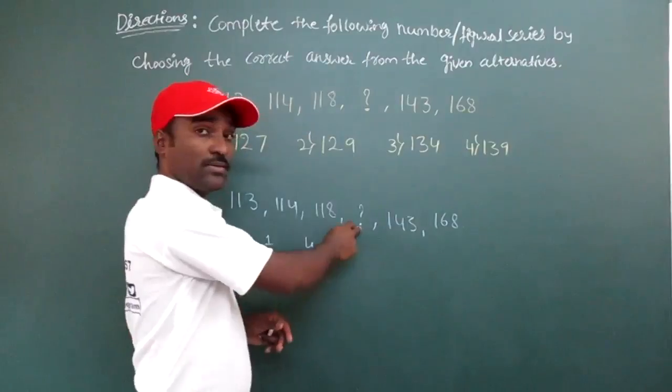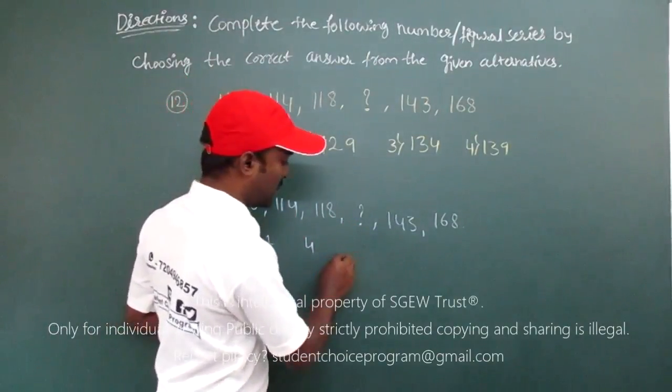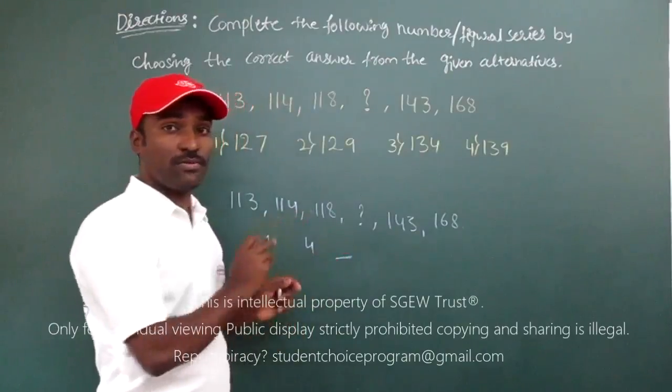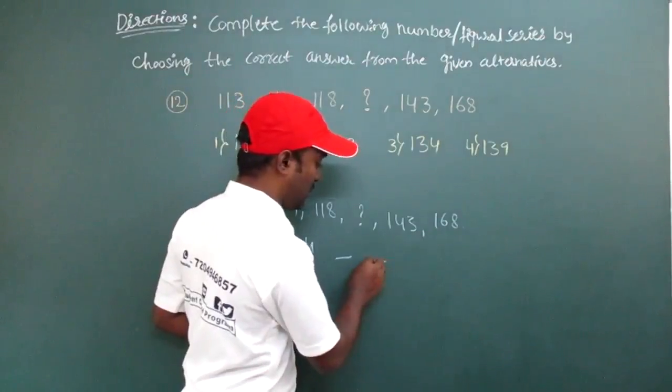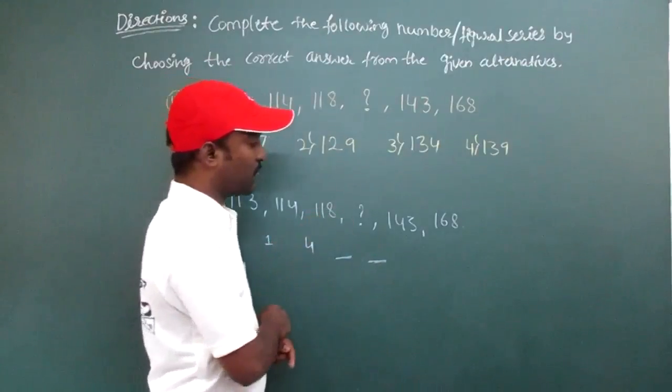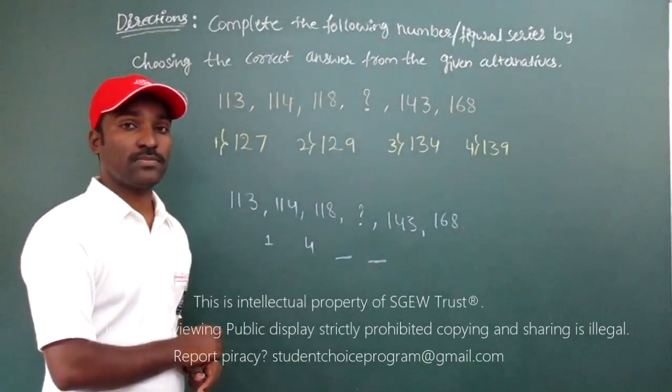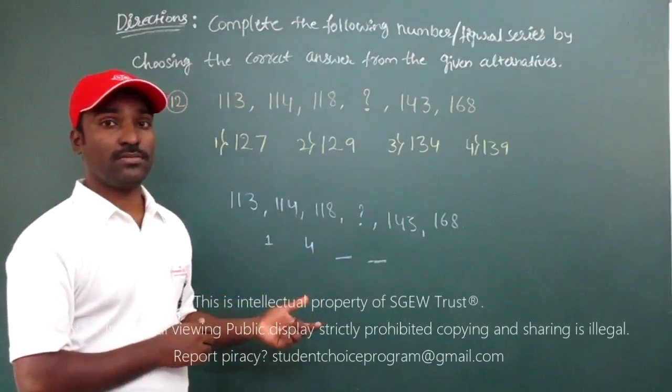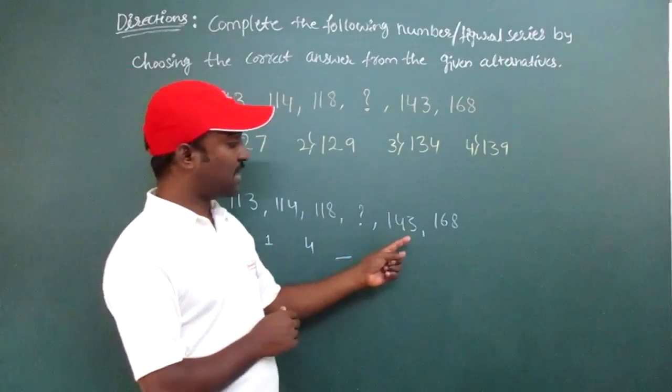Next, here I am having question mark, I can't get difference. Leave that, so I will get some number here. Here, 143 minus question mark, I don't know this question mark, so I will get one number here, I will put dash there. Now moving to next numbers, 168 minus 143.